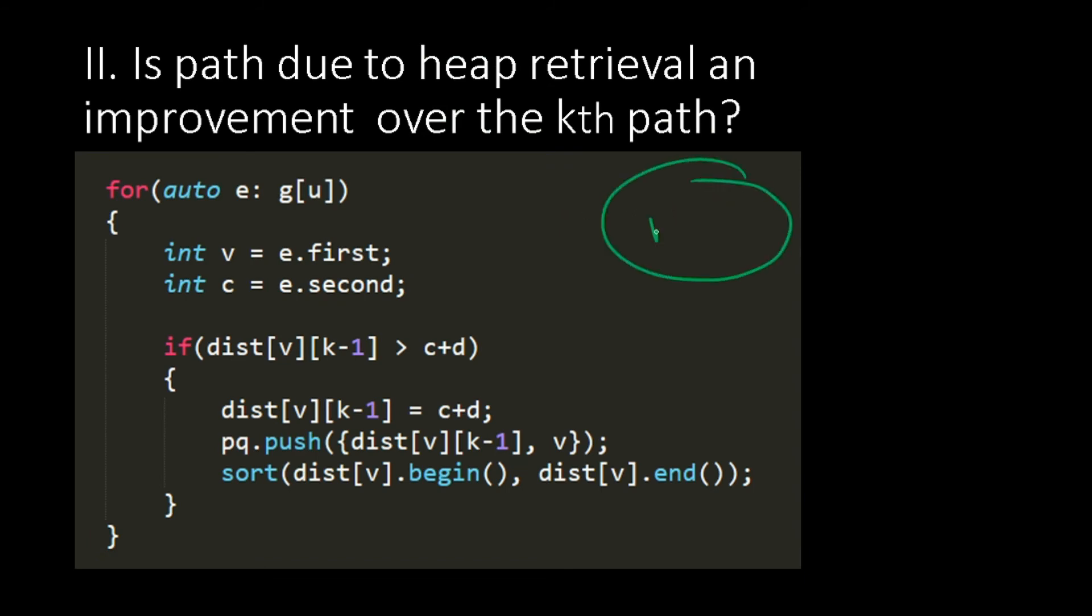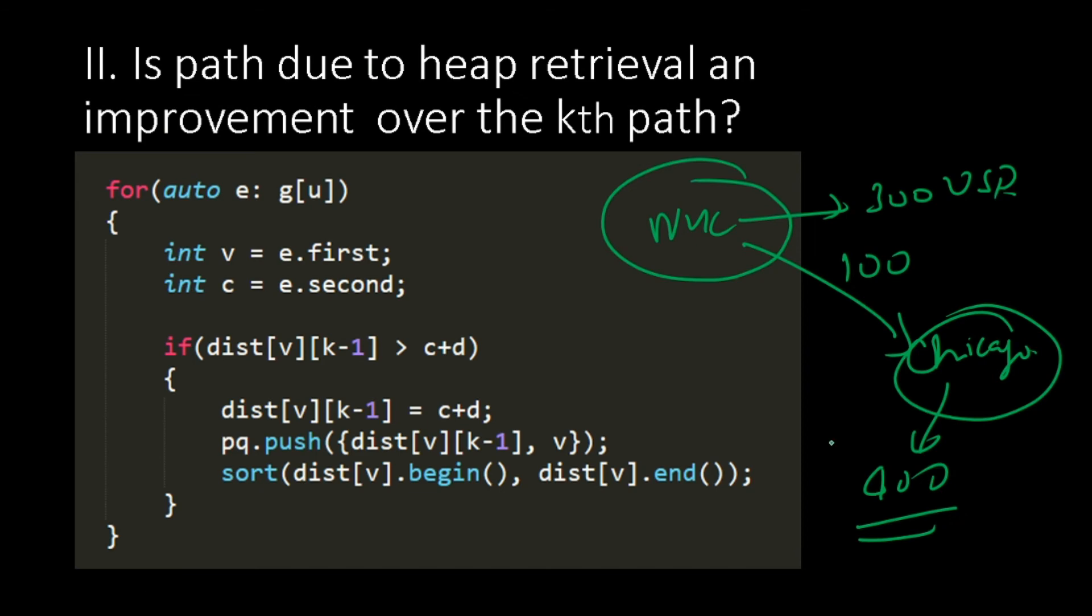So to illustrate, now you go to New York City in let us say $300. From New York City, you have a $100 flight to Chicago. So the cost of getting to Chicago is $400. Now is this a good deal?